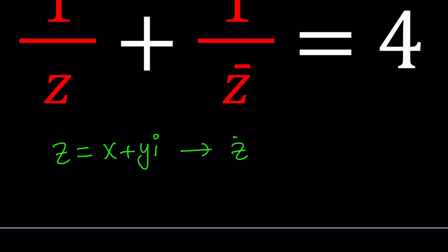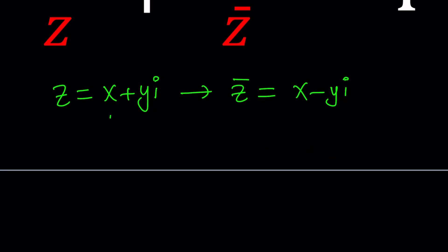Z bar is the conjugate which is actually obtained by changing the sign of the imaginary part. Make sense? Just negate y and don't ask why. So now here's what I have: 1 over x plus y I plus 1 over x minus y I equals 4.